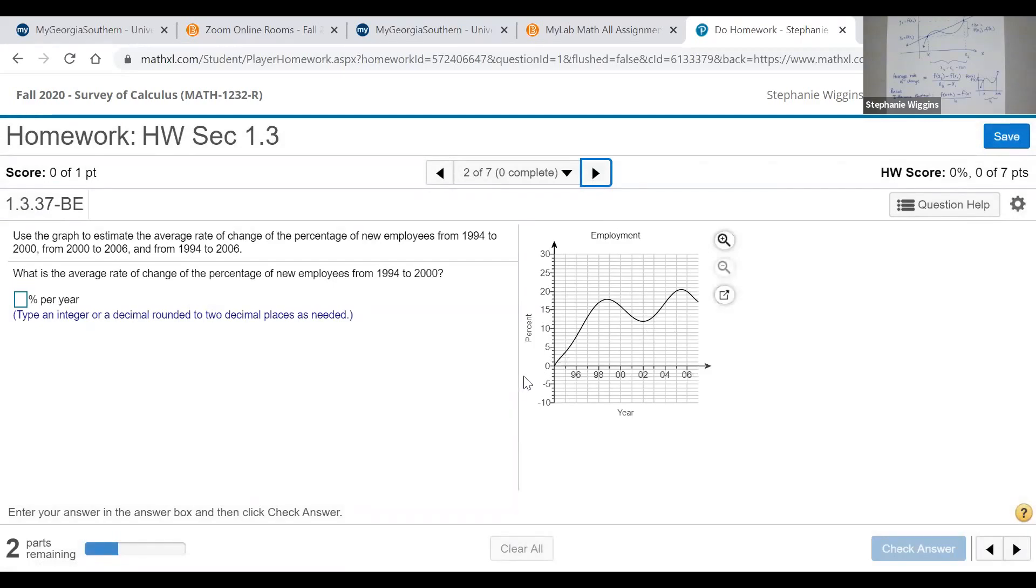Let's take a look at this problem for a moment. This is a really good example. Remember, average rate of change is the slope of a line. So when it says, what is the average rate of change, all you're doing is calculating the slope. But what values are you going to use to calculate the slope? Well, there are three different average rates of change that they want you to calculate. The first one is over a period of from 1994 to 2000.